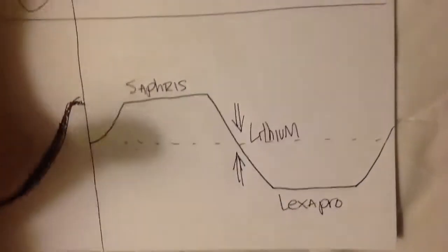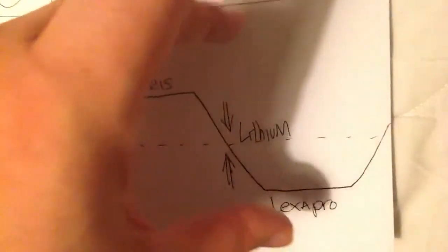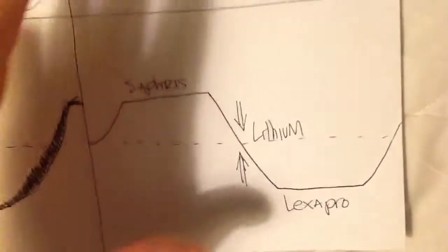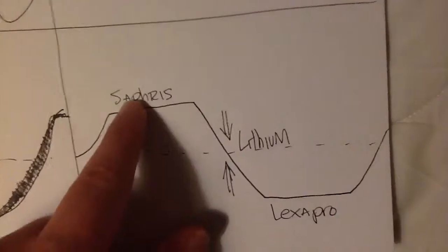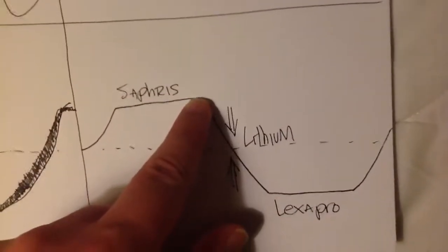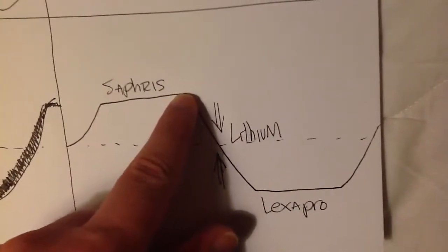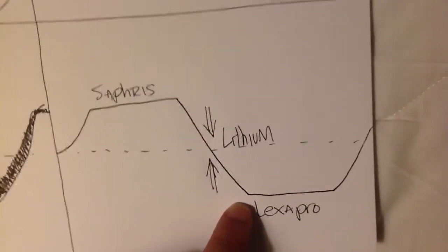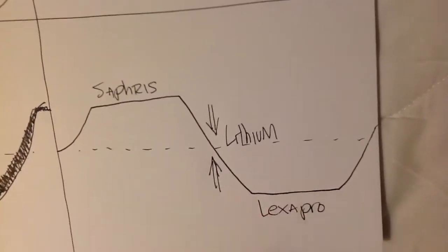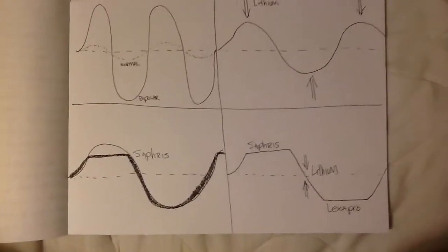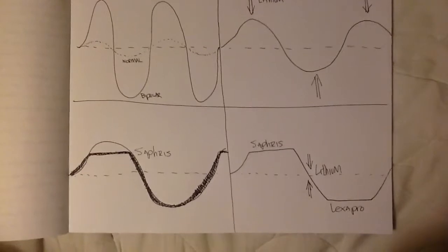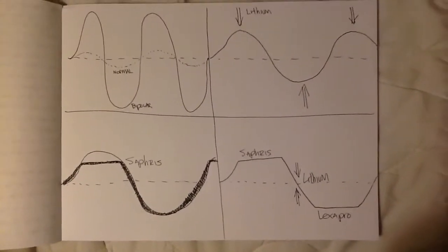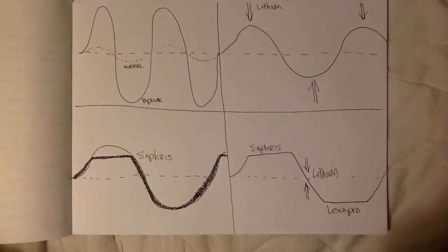So you have, all in all, lithium squunching down the curve. You have Saffiris cutting off the manic mountaintops, and Lexapro cutting off the depressive valleys. That's part of how I think about what these medicines are going to be doing in my body right now, and what the outlay of the three medicines that I'm taking are, how they're going to be interacting.